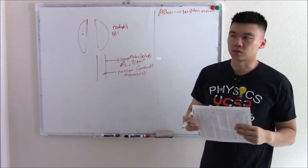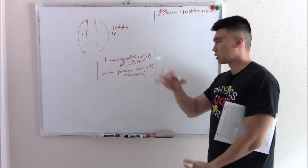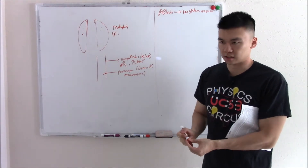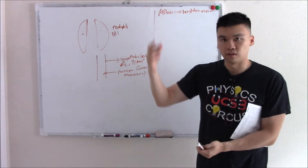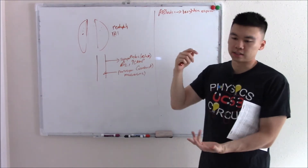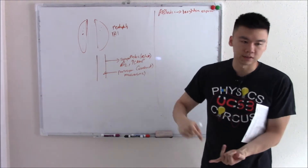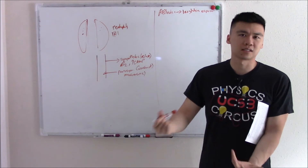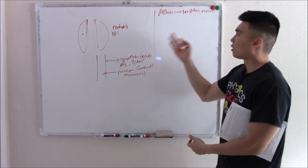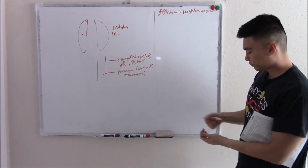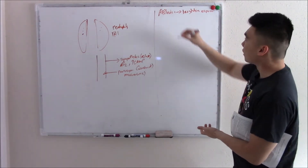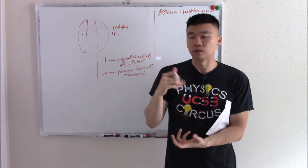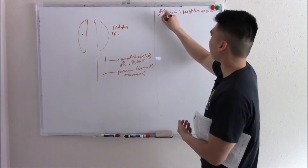Spirometry will show all the same signs as obstructive lung disease: increased residual volume, decreased FEV1/FVC ratio, all that. Hyperinflated lungs on chest x-ray. The key difference, however, is that asthma is reversible.